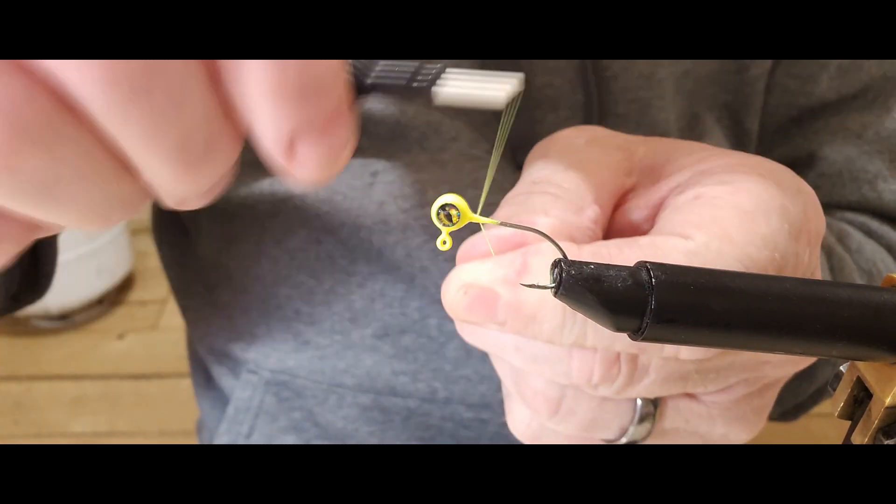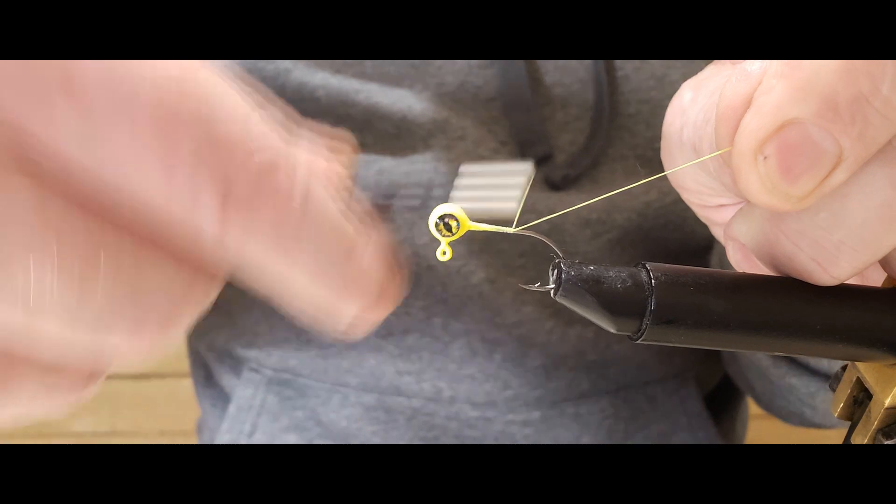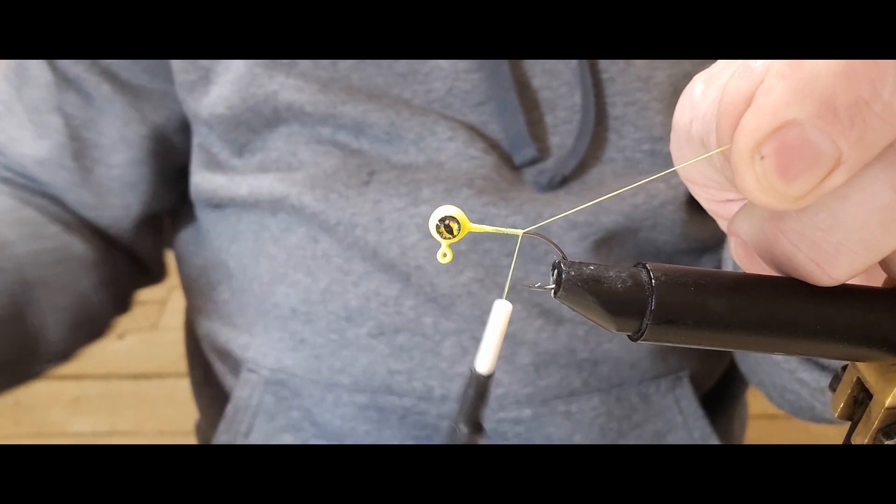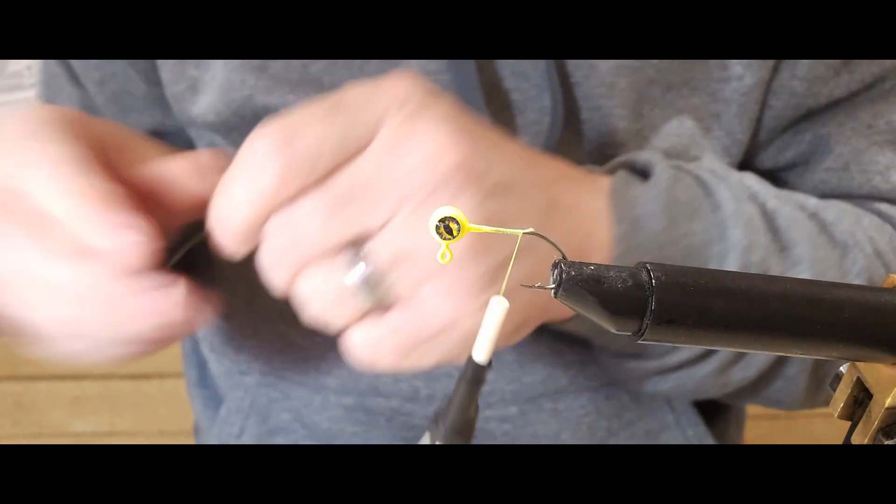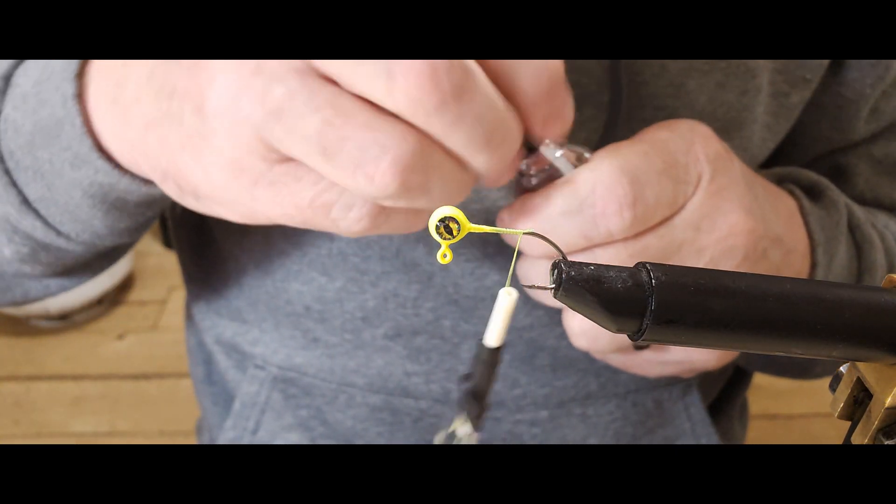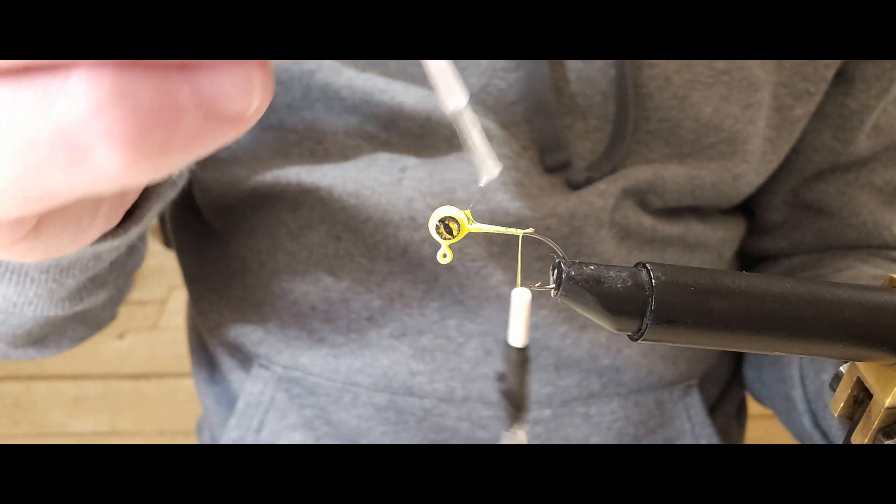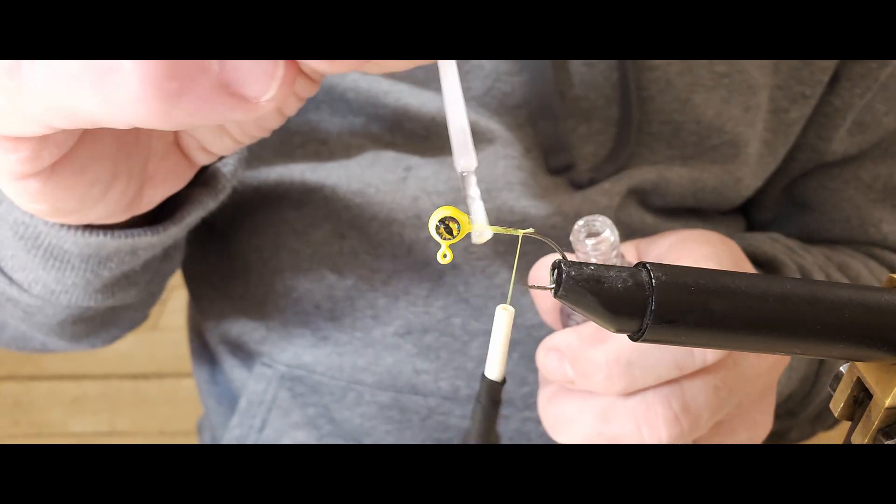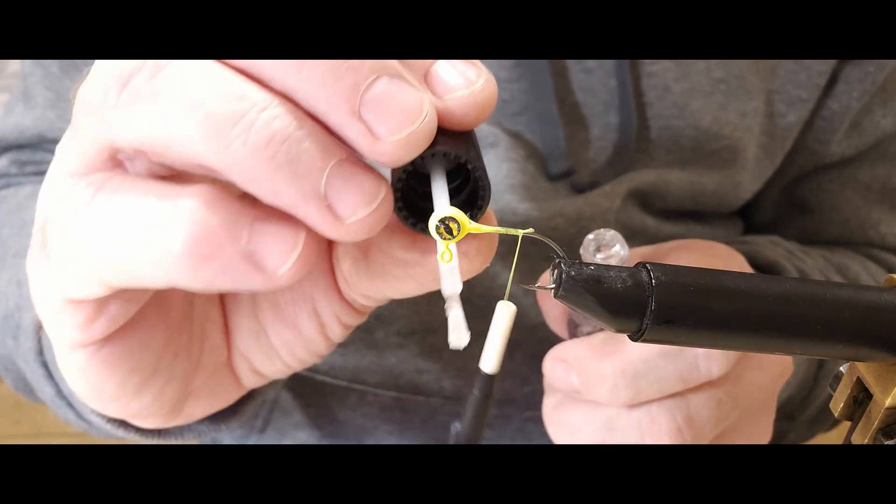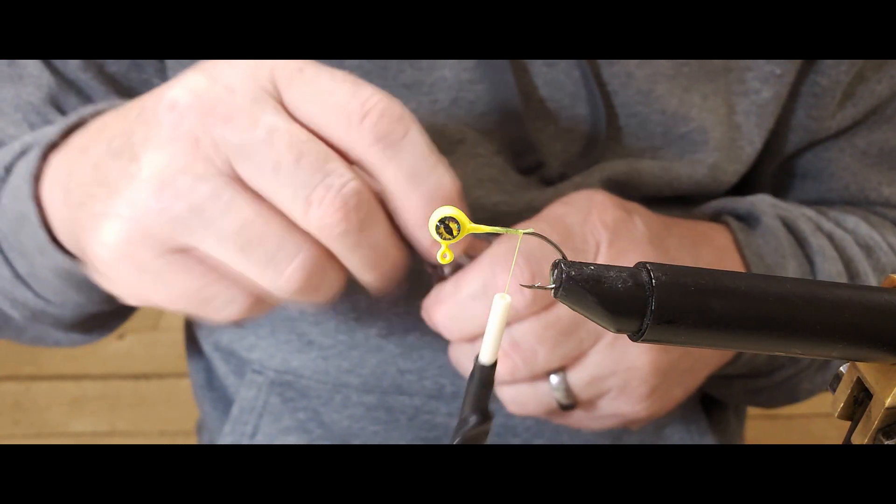So let's go ahead and get us some thread laid down. We're just going to tie it back to the hook tip. Go ahead and cut it. Get some Sally Hansen out here and go right over those threads. Not too much on.